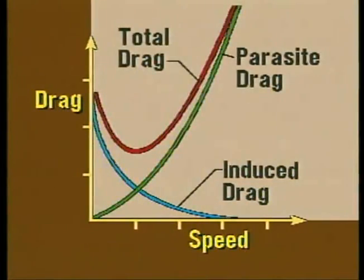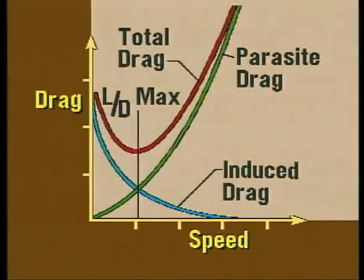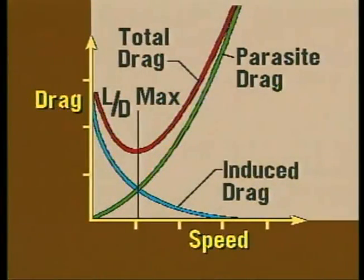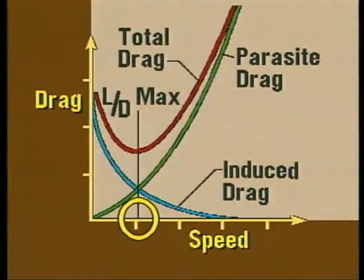If the two drag curves are combined and the values added together, we can find a point where drag is at a minimum. This point is known as L over D max, which is where lift, when compared to drag, is at its greatest. Flying the airplane at this speed provides the best glide ratio and other performance benefits.